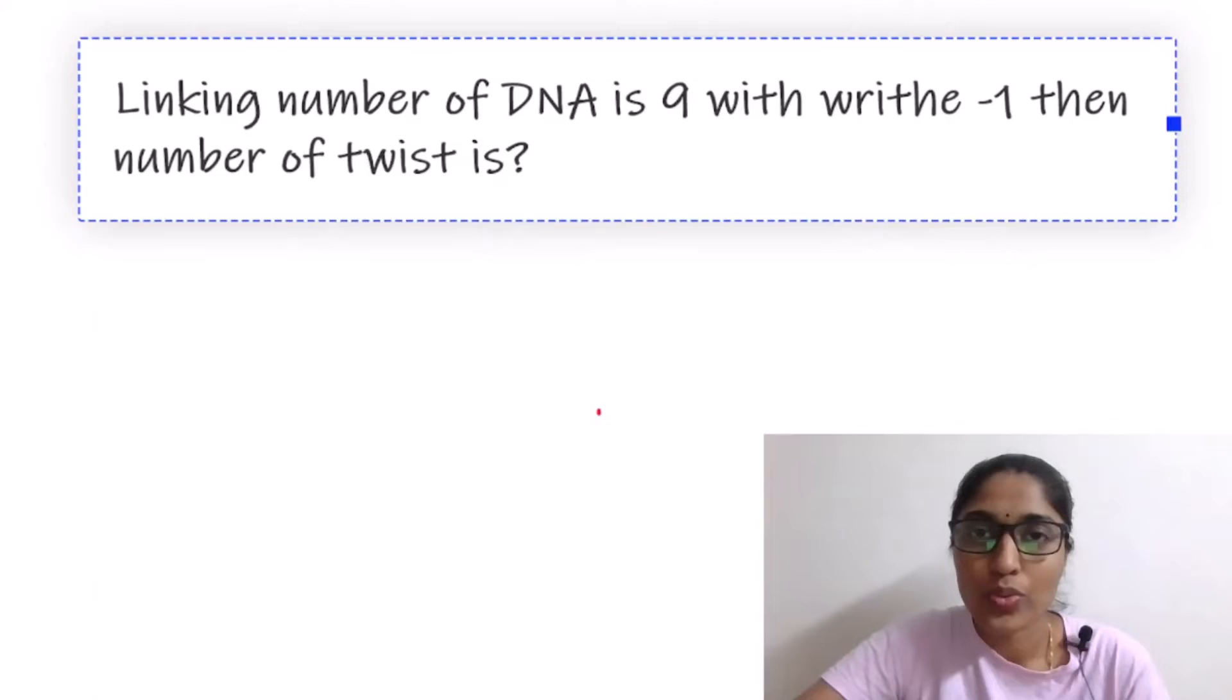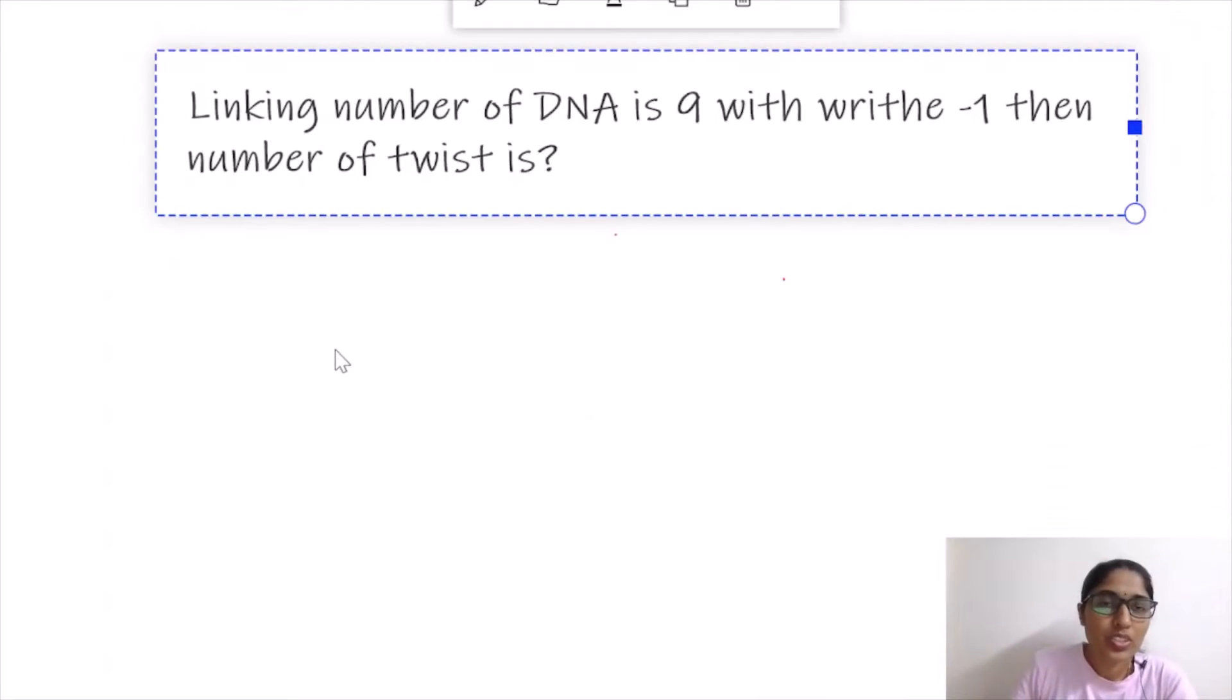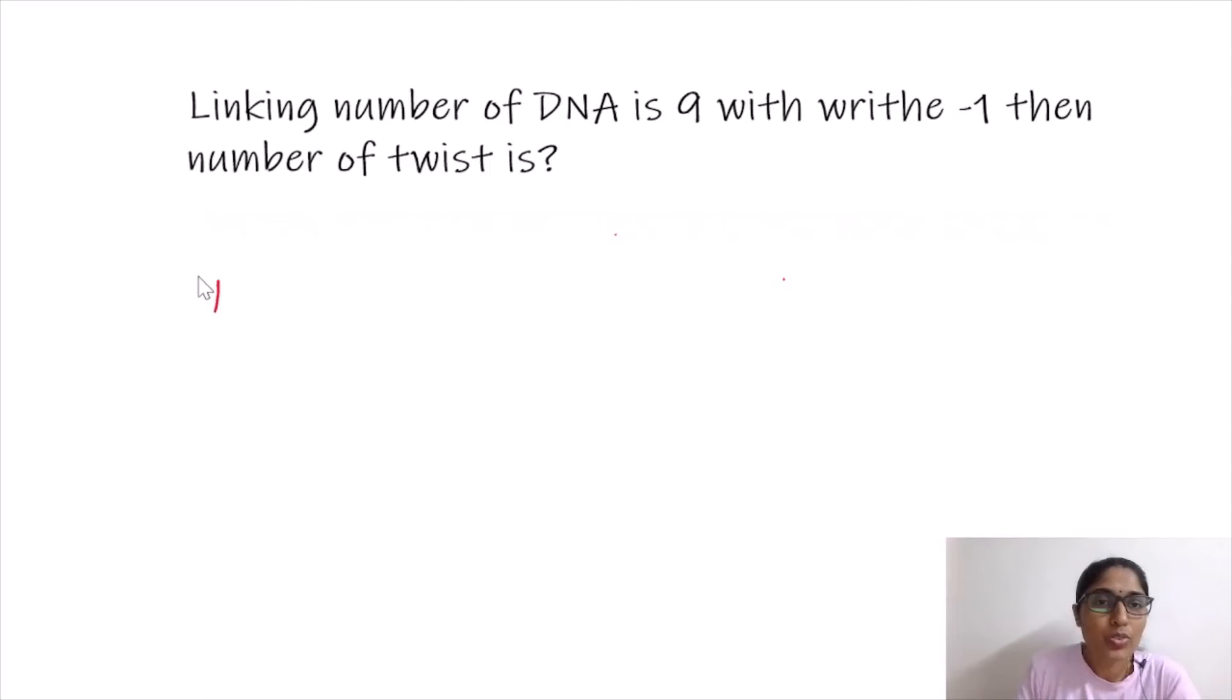So without further delay, let's get into today's class. This is our question here: linking number of DNA is 9 with writhe -1, then number of twist is? Here we have to find number of twist.